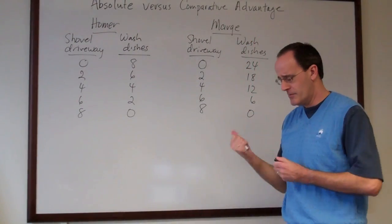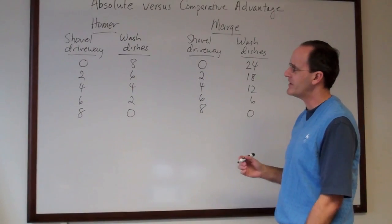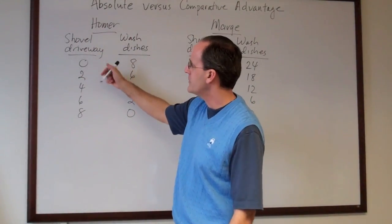In order to do that, what we've got to do is determine who's the low opportunity cost producer of each activity. Let's start with shoveling the driveway.